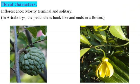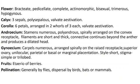Floral characters: inflorescence is mostly terminal and solitary. In Artabotrys, the peduncle is hook-like and ends in a flower. The first picture is Annona squamosa and next Artabotrys hexapetalus.